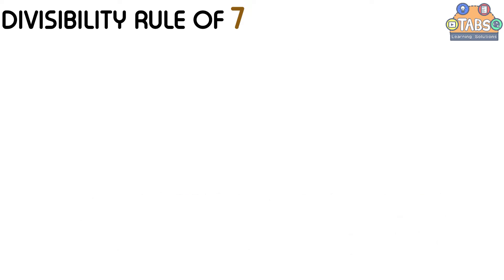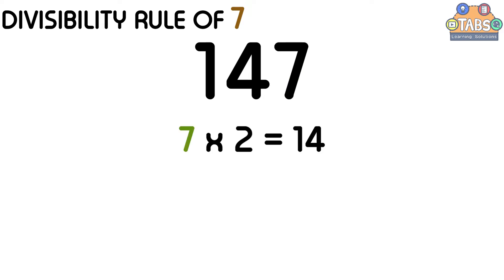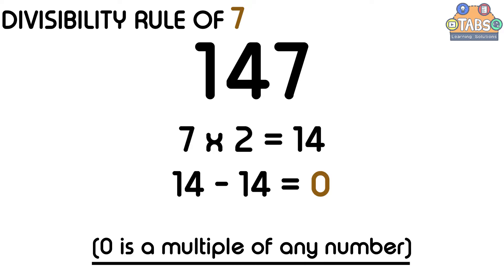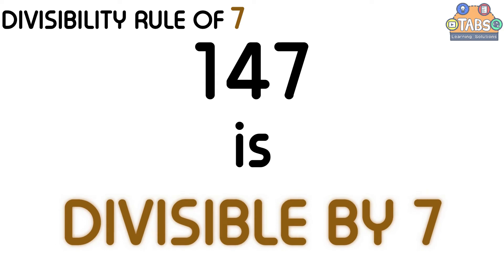Now let us try another example: 147. The first step is we need to double the last digit of the number, which is 7. 7 times 2 is equal to 14. Then we need to subtract 14 from the remaining digits of the number, which is 14. 14 minus 14 is equal to 0. And since 0 is a multiple of any number, 147 is divisible by 7.